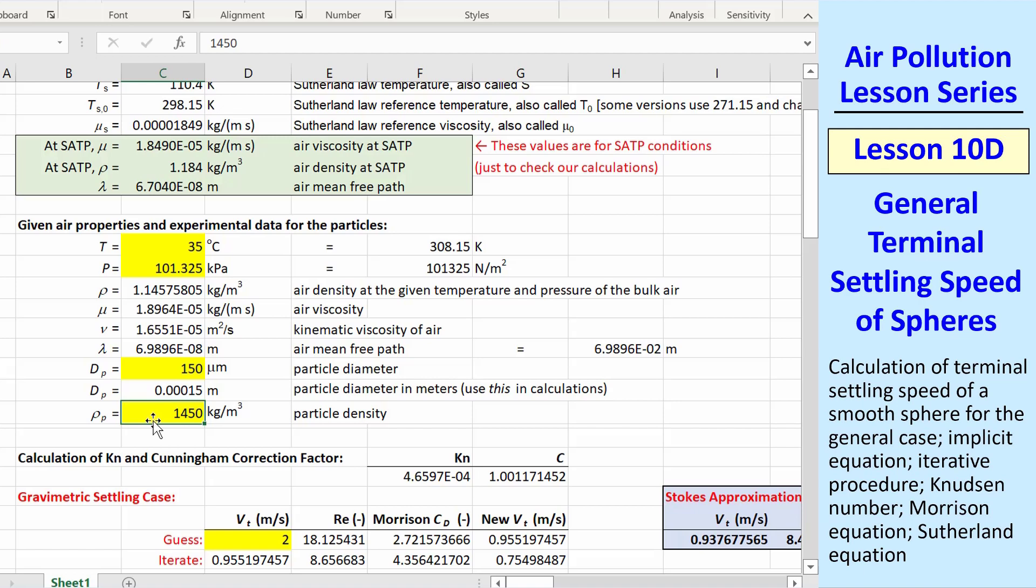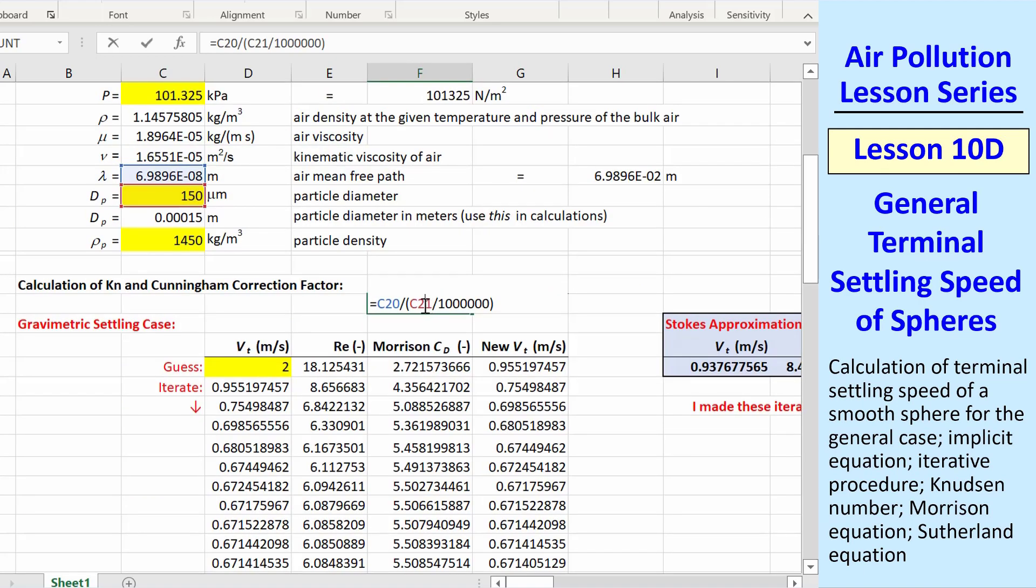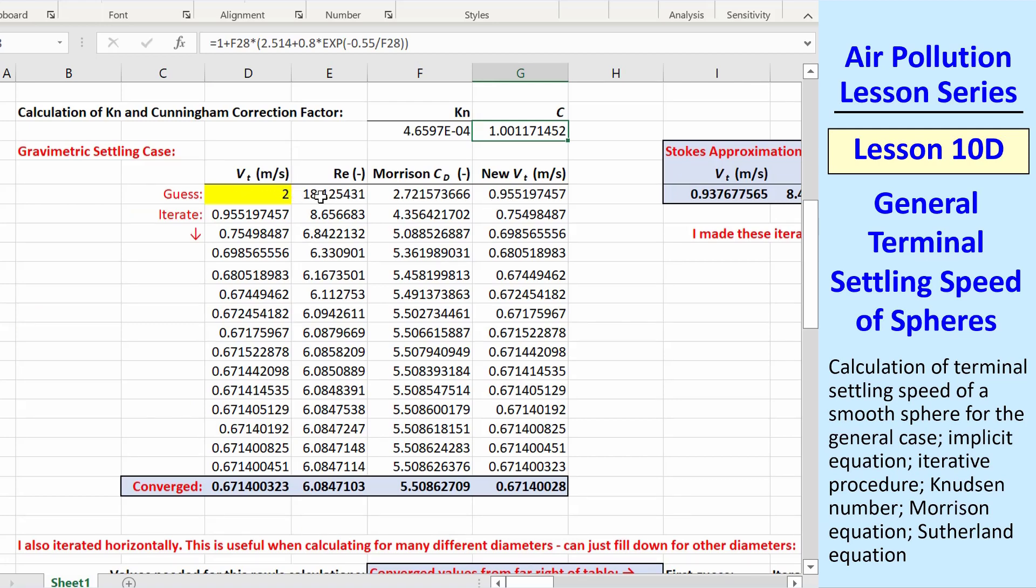This yellow cell is dp, which I input as 150 microns. I convert to meters, and here's the particle density. I calculate Knudsen number here, just the ratio of these two values, being careful with units. Then I calculate Cunningham correction factor.